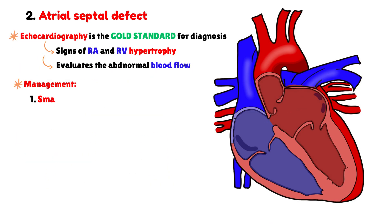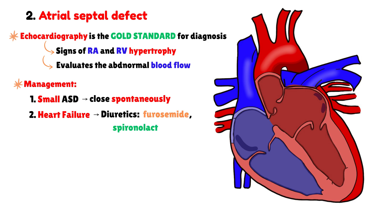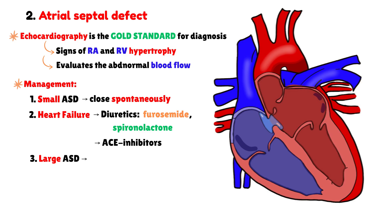Smaller atrial septal defects may close spontaneously. However, when heart failure develops, treatment usually includes diuretics such as furosemide or spironolactone, together with ACE inhibitors. If the defect is large, or if medical therapy does not succeed, percutaneous closure with a device is indicated.